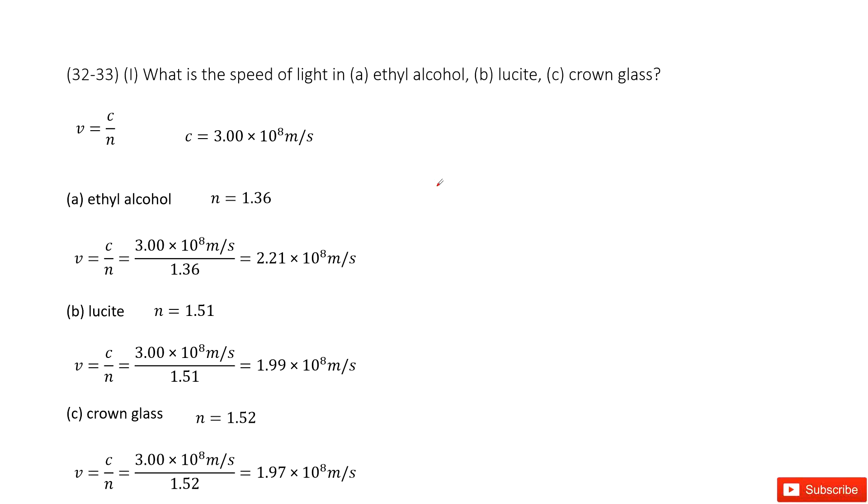Chapter 32 is about light, reflection, and refraction. We need to know what is the speed of light in these three objects. We need to find this v.